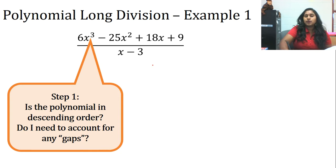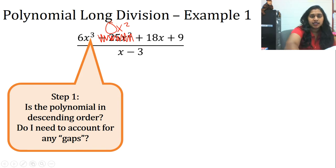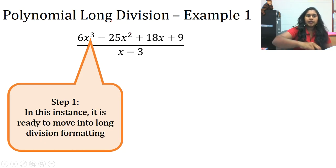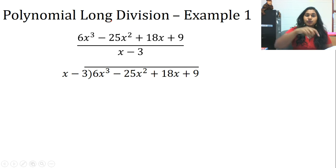The second question is, do I have any gaps to account for? Well, what if this value never existed? That term was not there. Then I would need to account for that gap. There is an x squared, it just has a coefficient of zero. That's especially important when we move to synthetic division. Okay, we're ready to go. So I'm going to move to long division format. It looks ugly. I made it look good. That's the very first step. Make it look good. Descending, gaps, put it in your long division format.